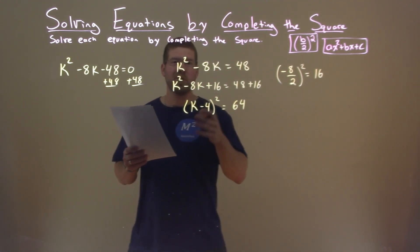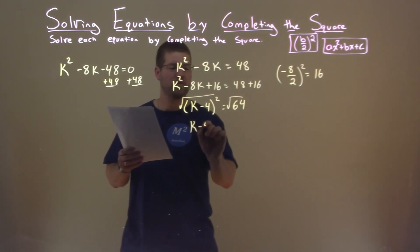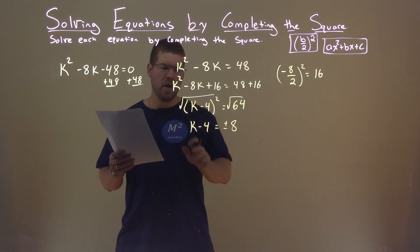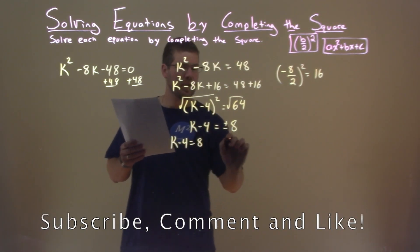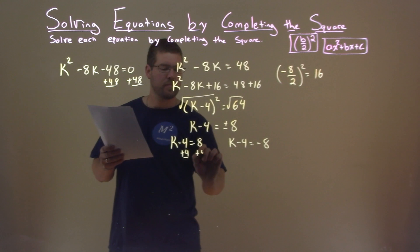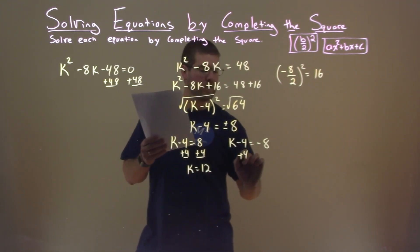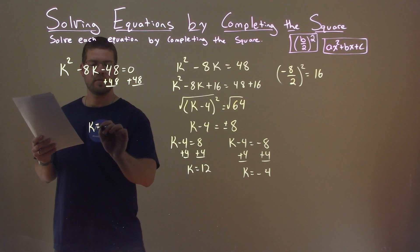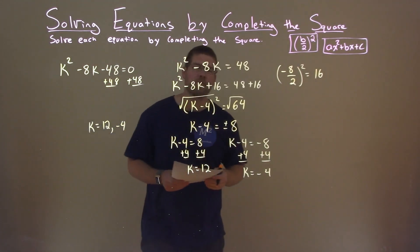We have to take the square root of both sides, giving me k minus 4, and the square root of 64 is 8 — don't forget the plus and minus. Breaking this into two equations: k minus 4 equals positive 8, and k minus 4 equals negative 8. Adding 4 to both sides: k equals positive 12. Adding 4 again: k equals negative 4. We can write this as one statement: k equals 12 and negative 4 — that is our final answer.